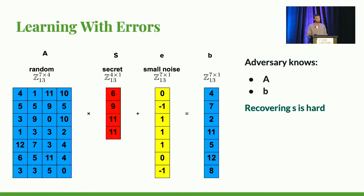The way we're going to be adding that noise is using the learning with errors problem, which is a quantum-secure computation problem revolving around linear algebra. The setup is: we have a public, uniformly-randomly-distributed matrix A with finite field elements, a secret vector S which is relatively short, and a small non-uniformly-distributed error term E. We apply A times S plus E to get a vector B. The learning with errors hardness assumption says that given A and B, we can't find S or E.